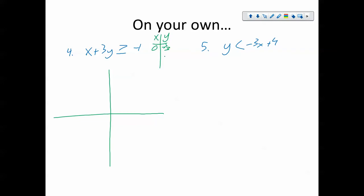And when I plug in zero for y, I get negative one for x. So I'm going to put a point at negative one, zero and zero, negative one-third.